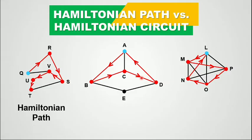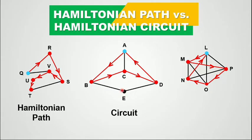How about the second graph? We started from vertex A, to B, to C, to D, and then returned to vertex A. This is just a circuit — it is not a Hamiltonian path nor a Hamiltonian circuit. Because yes, we started and ended at the same vertex A, but we have not passed through vertex E. There is still a vertex in the graph which we have not passed through. That is why it is just a circuit, not a Hamiltonian circuit.